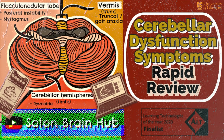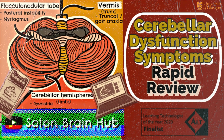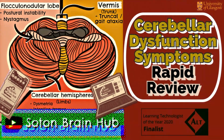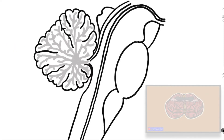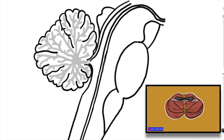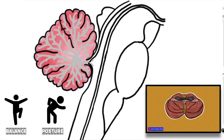Hello and welcome to another Sotton Brain Hub video. Firstly, let's remember that the cerebellum is located at the back of the brain under the occipital and temporal lobes of the cerebral cortex, and that it's involved in the coordination of movements as well as in maintaining balance and posture.